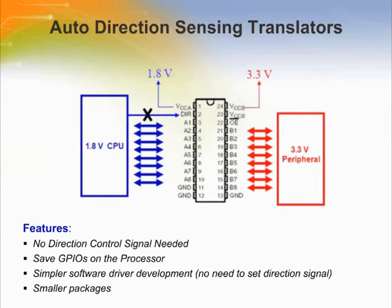The translators discussed thus far need a directional control signal to guide data from A to B or from B to A. System designers have to use extra GPIOs on the processor and write software to implement these. To overcome these limitations, TI has developed auto-direction sensing translators. As the name suggests, these devices do not need a directional control signal to guide the direction of data flow.